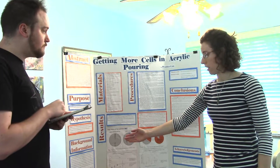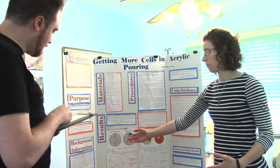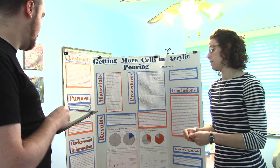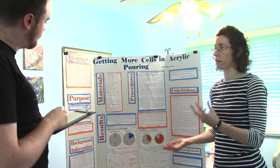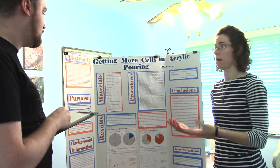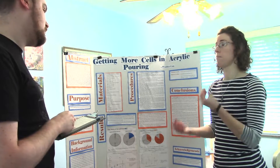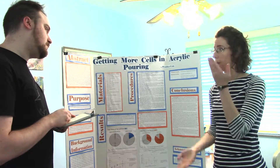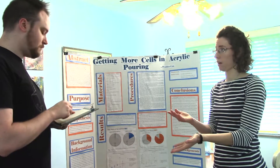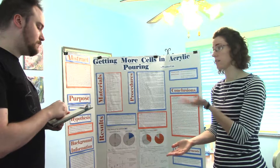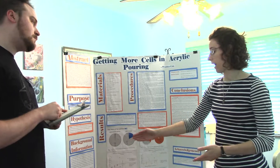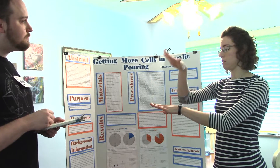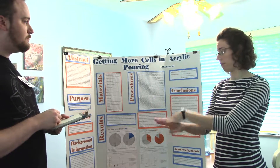I did some research and found out about the Rayleigh-Taylor effect. I also learned that acrylic paint is water-based, so water is the main ingredient. The main difference between different types of paints is the pigment, which can make some paints more or less dense and cause them to float toward the top. If a denser liquid is on top, it tends to sink, and that causes the bubble effect.